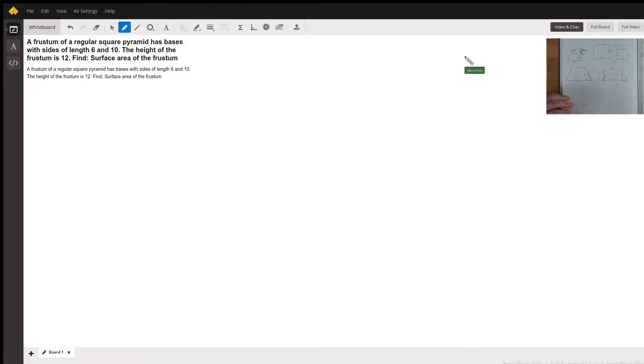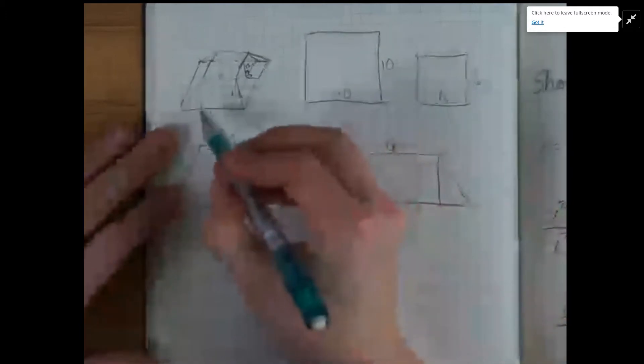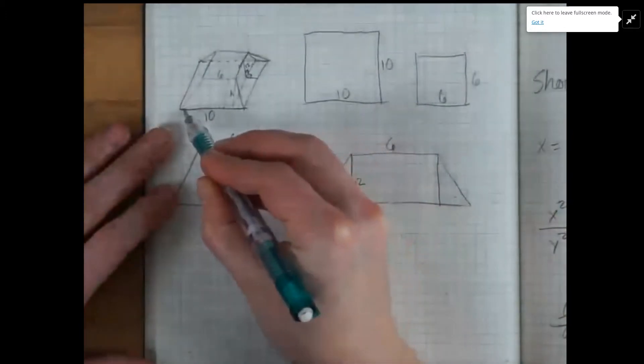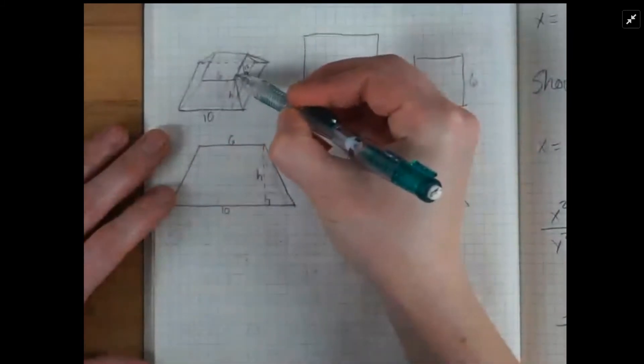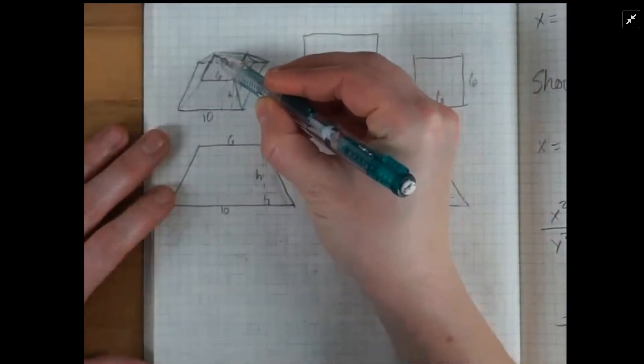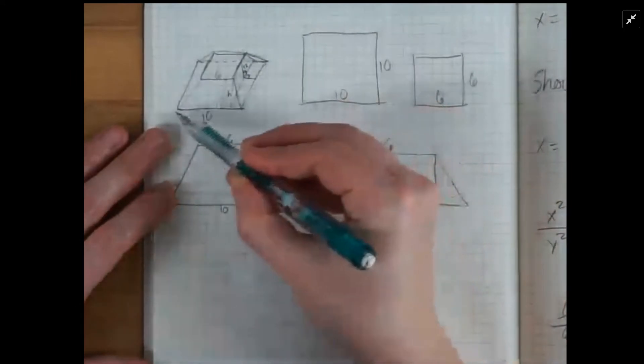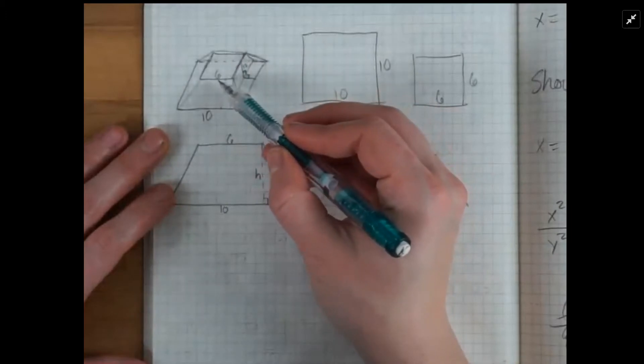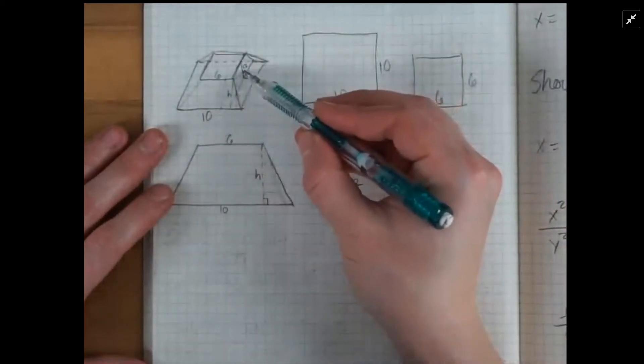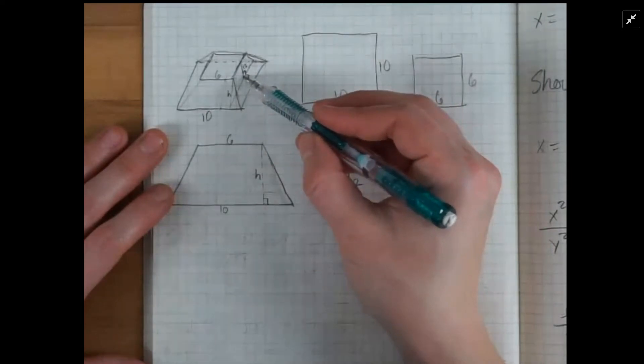So our frustum has a base length of 10, and it was chopped off when the top was at 6. So we've got our square base and square top, and we're also given a height from the bottom to the top of 12 units.